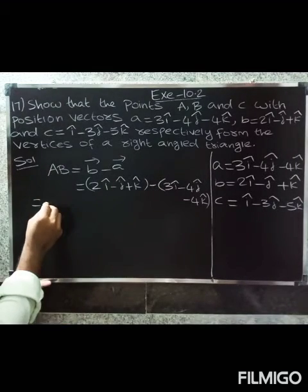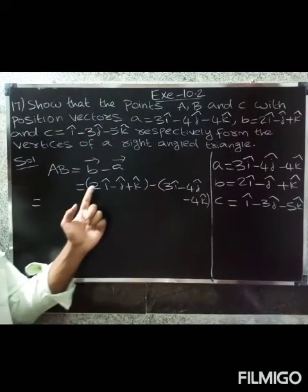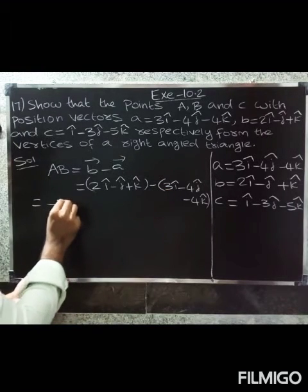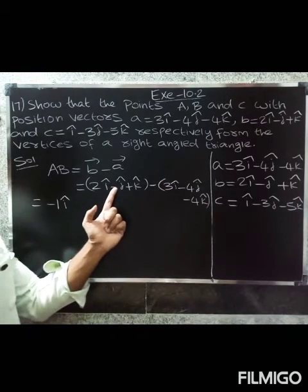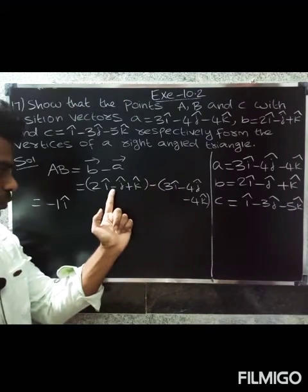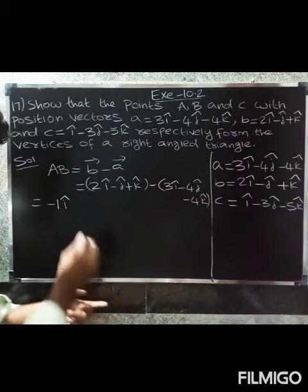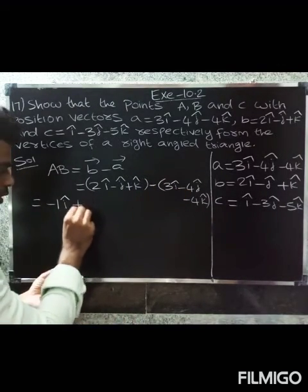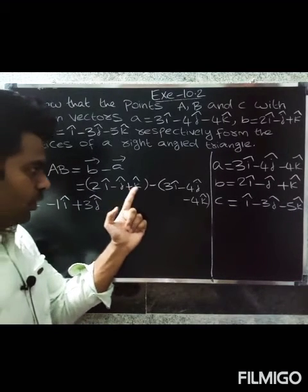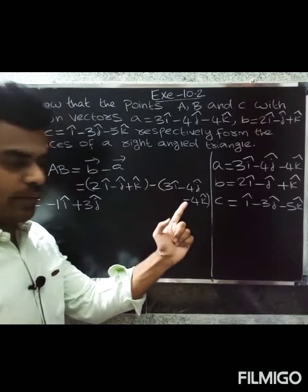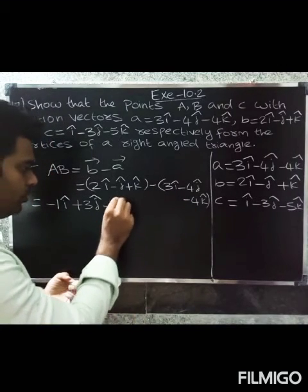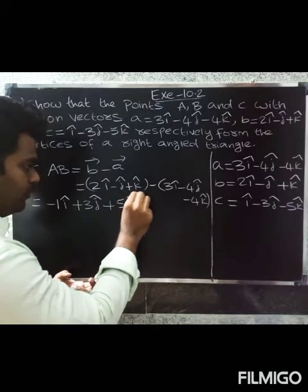Now subtracting components: 2i minus 3i gives minus 1i. For j: minus 1 minus minus 4 gives minus 1 plus 4 equals plus 3j. For k: plus 1 minus minus 4 gives plus 1 plus 4 equals plus 5k. So AB vector equals minus i + 3j + 5k.